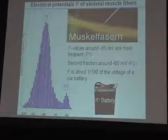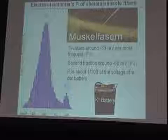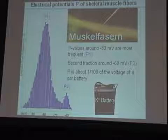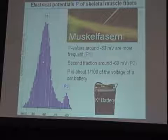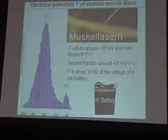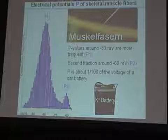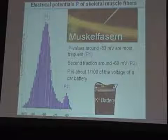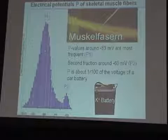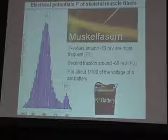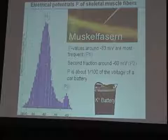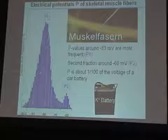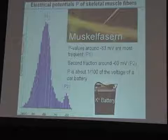These values are most frequent and we call them P1. You can see the peak of this frequency distribution. The peak is about minus 83 millivolts, and all fibers — or most of the fibers — have potentials around this peak value. It's close to a Gaussian distribution.